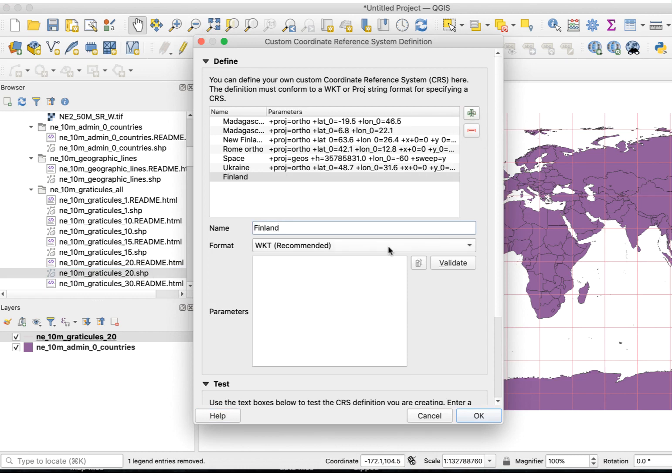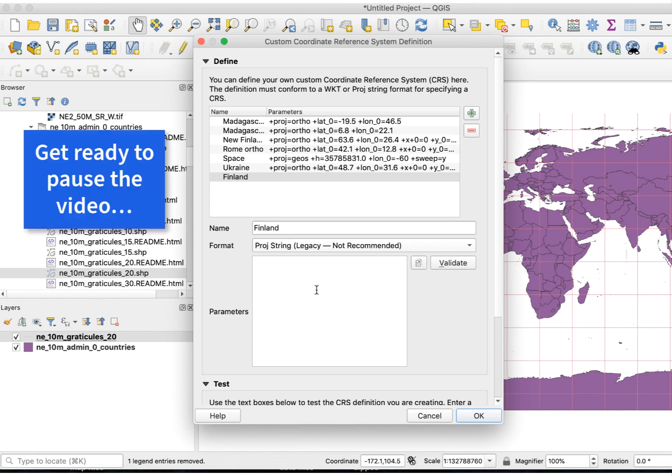Click on the Format menu and set it to Proj String. In the box, enter this formula.